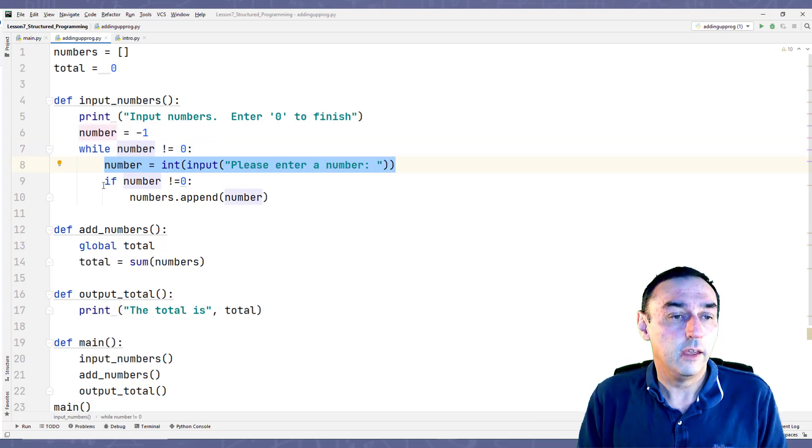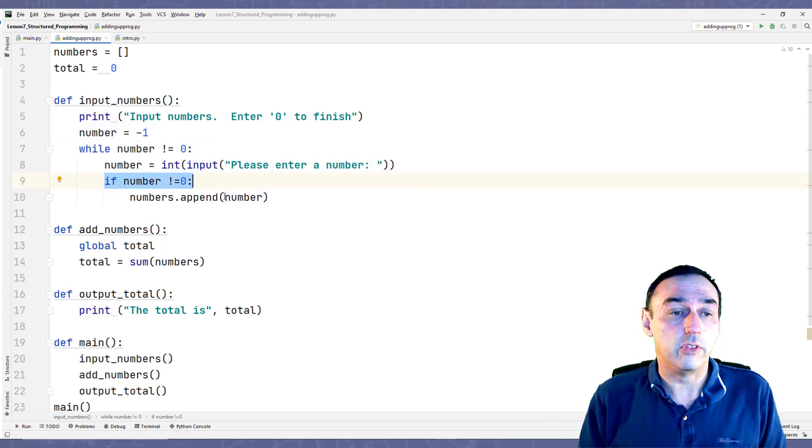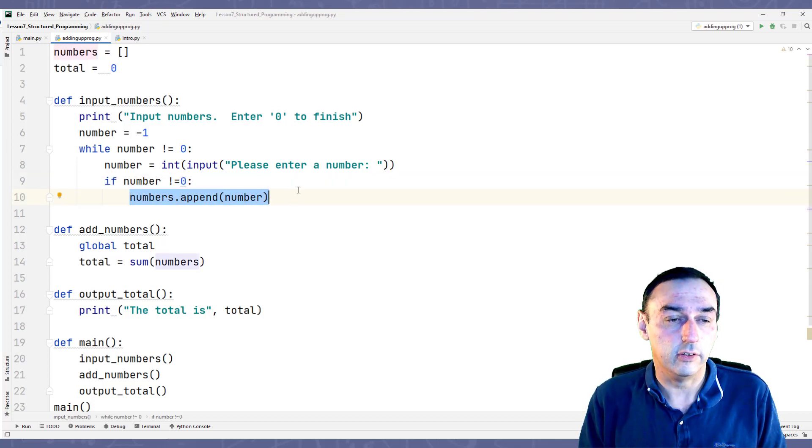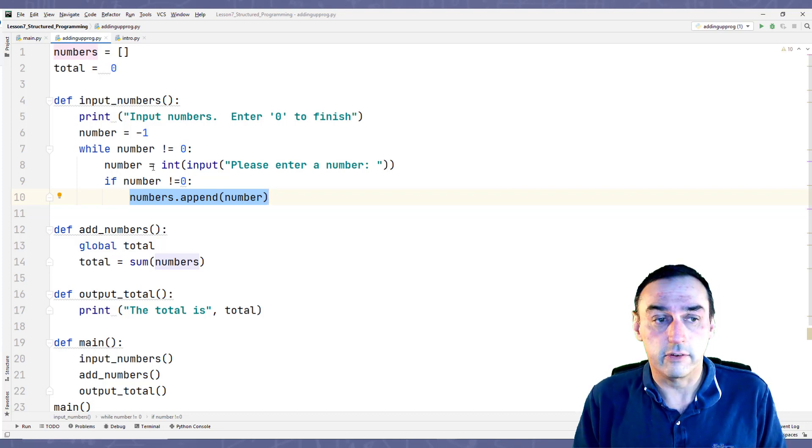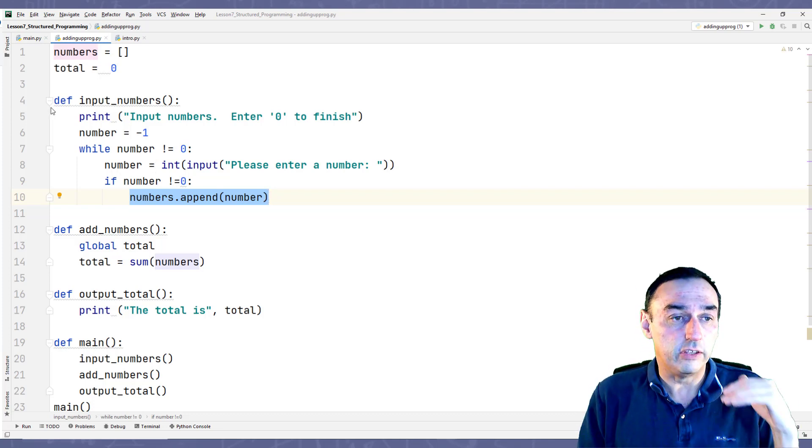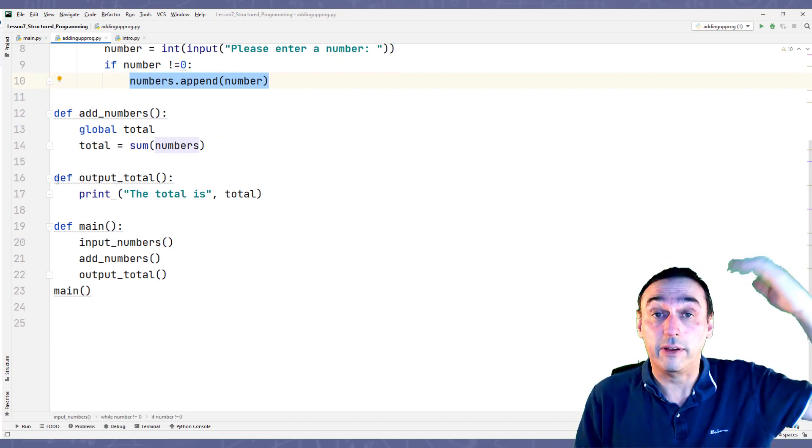Ask a number from the user, convert it into an integer. If the number doesn't equal zero, then add the number that I've just entered to the list, append it to the end of the list. And it will keep on looping there until I enter zero. When I enter zero, this function will finish and return back to where it was called from.